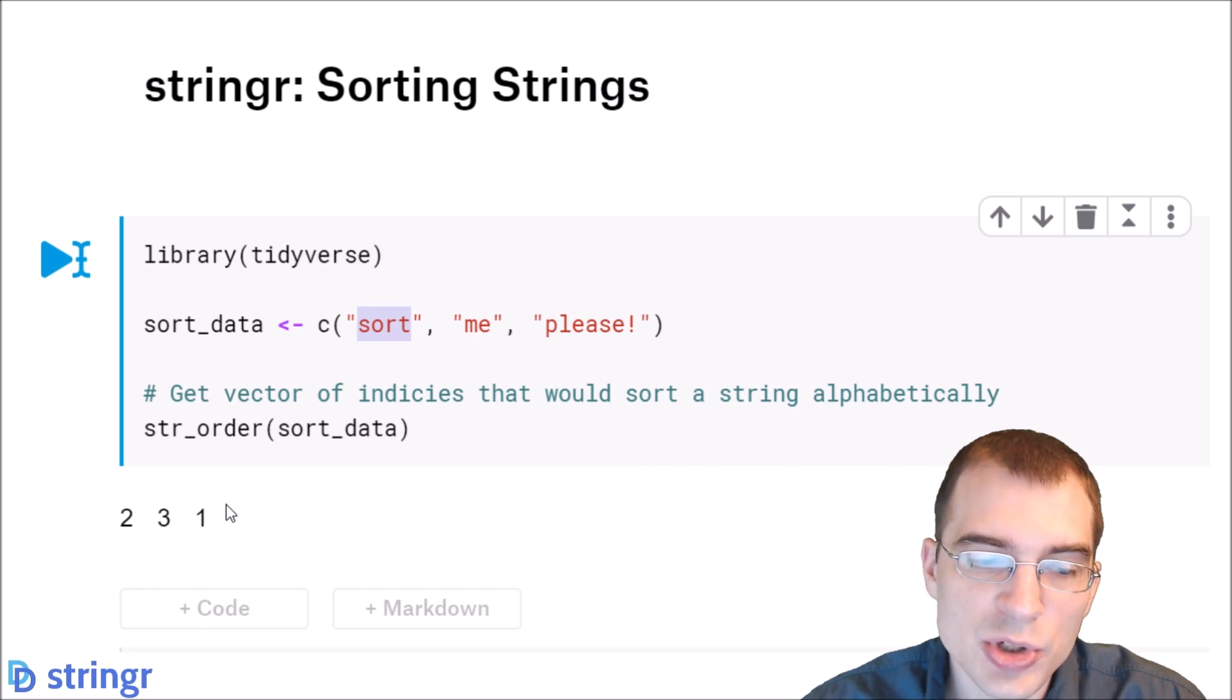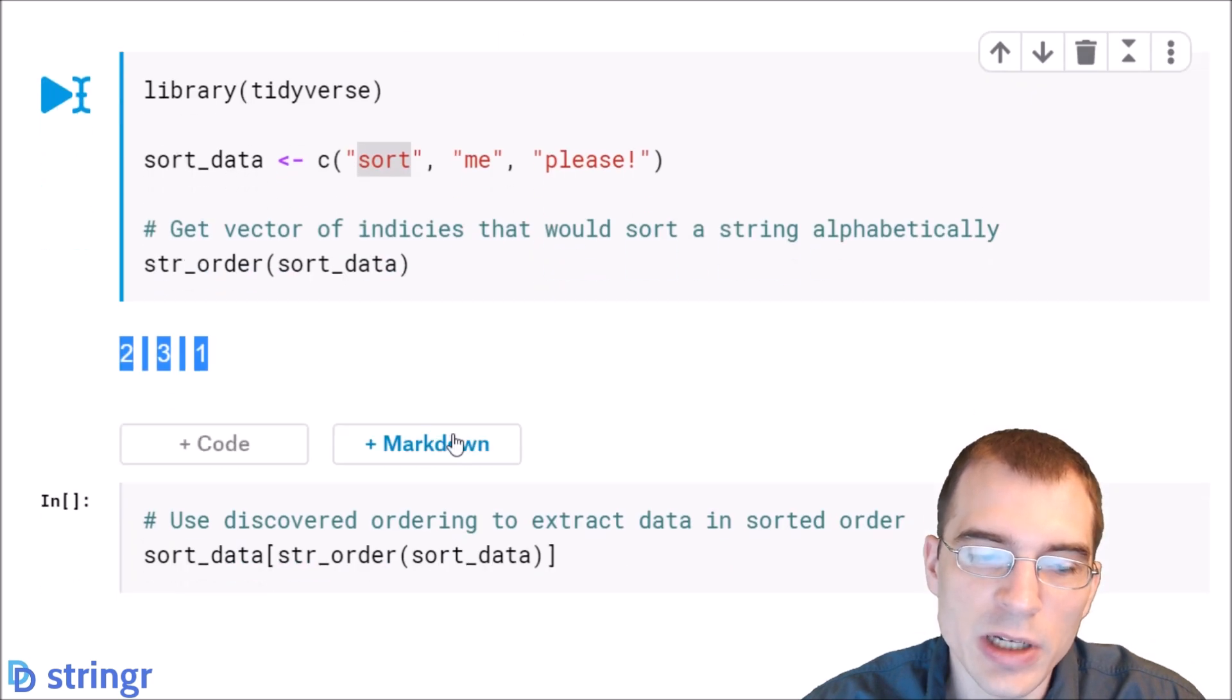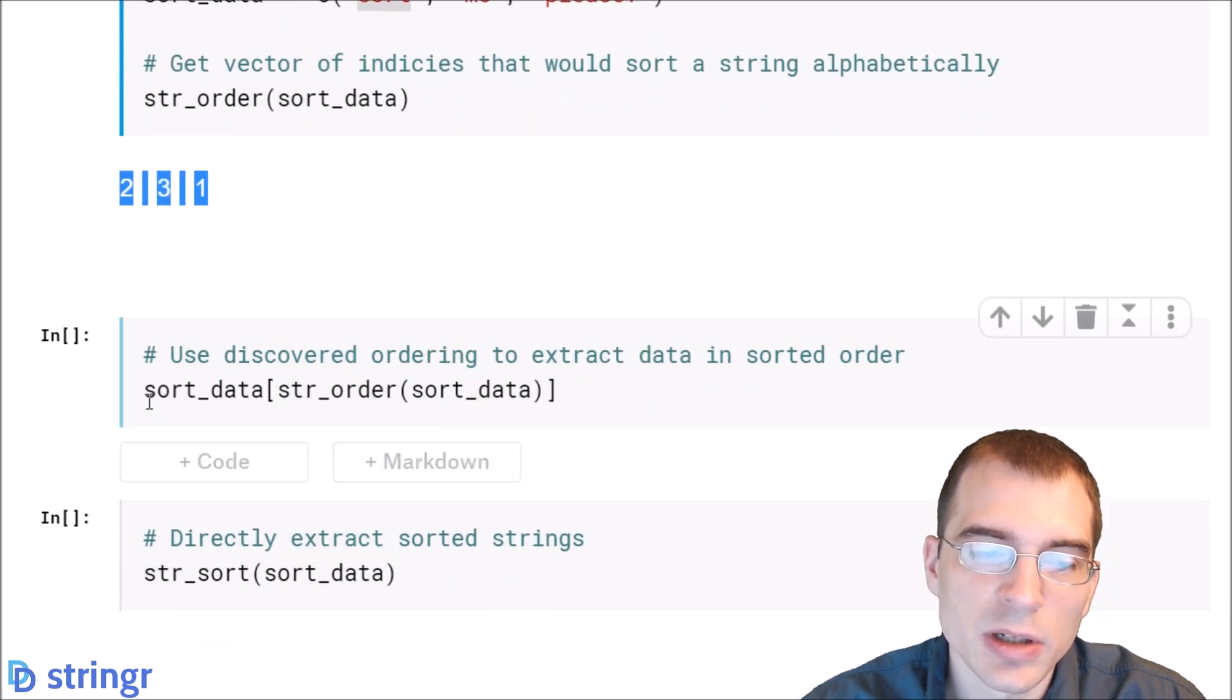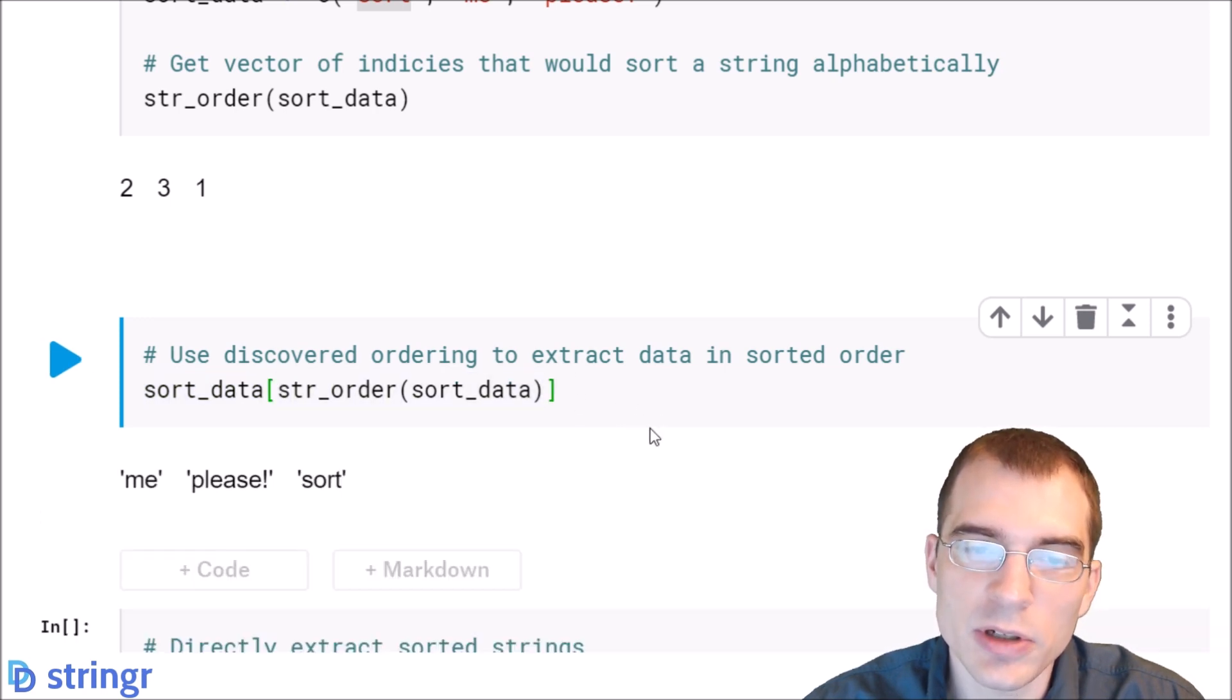Now we could use this ordering we just extracted to actually go ahead and order the data in the proper order through indexing. So that's what we're doing here. We're indexing into the data with that ordering that we just made. And if we do that, it will essentially sort the data for us.